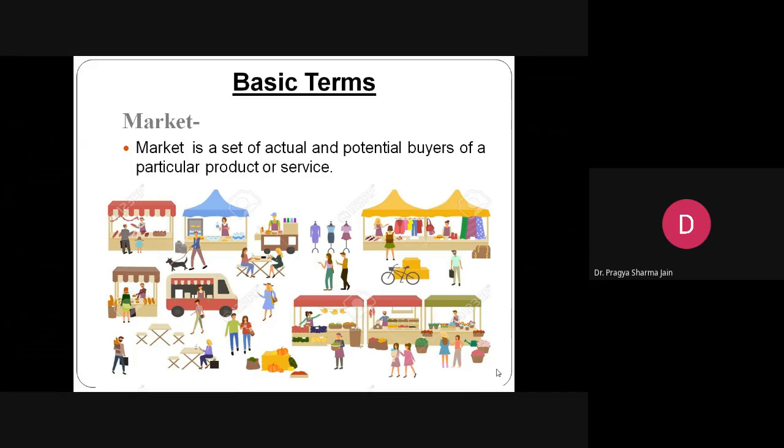But the modern approach defines market as a set of actual and potential buyers of a particular product or service. It mainly focuses on buyers and includes existing buyers and the people who could possibly purchase your product, which are also called potential buyers.